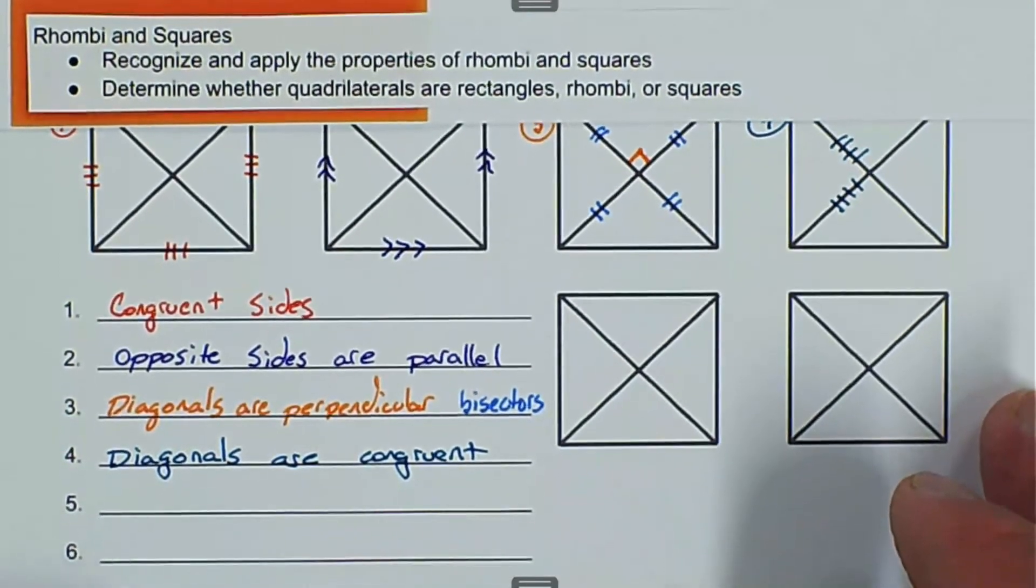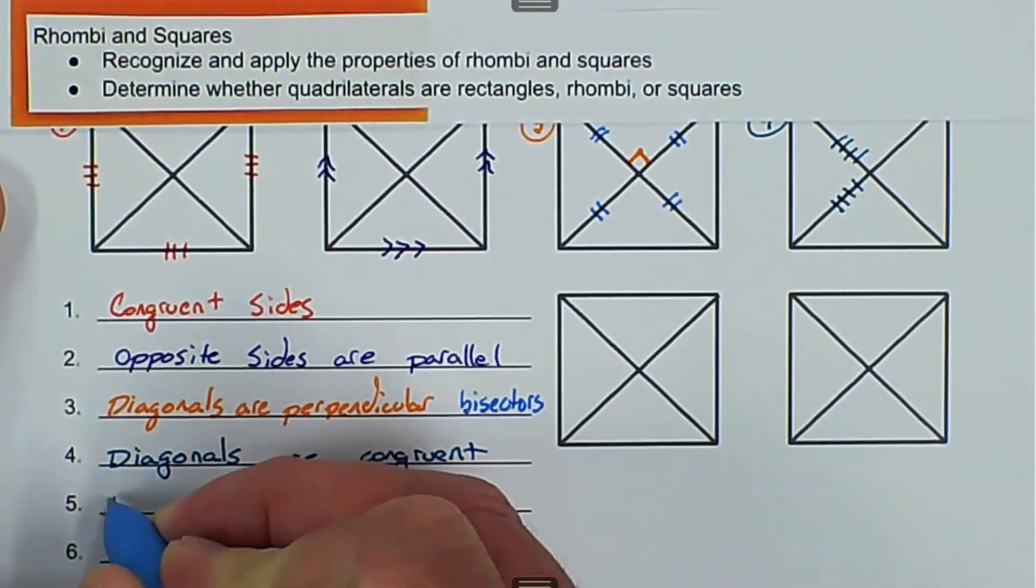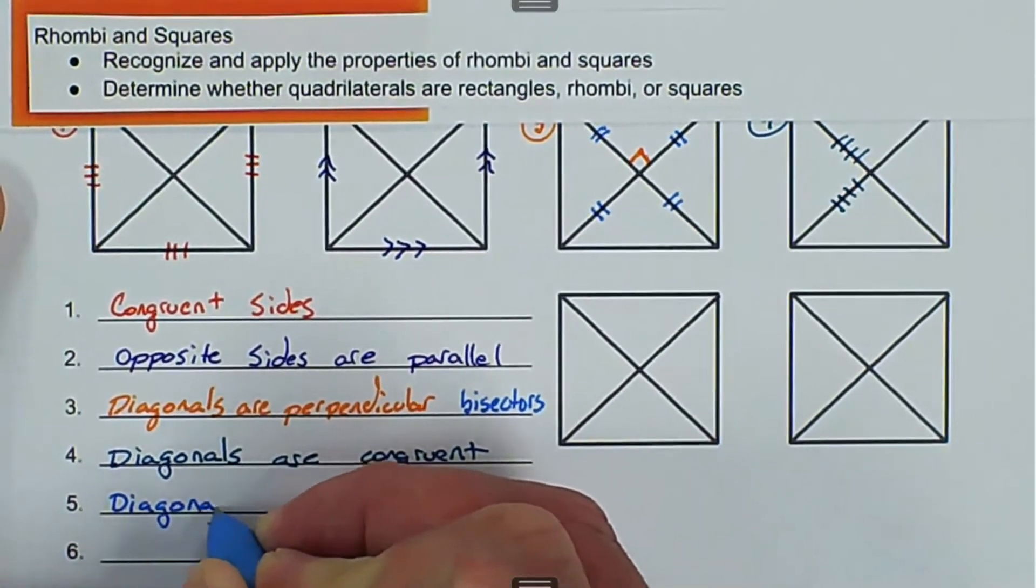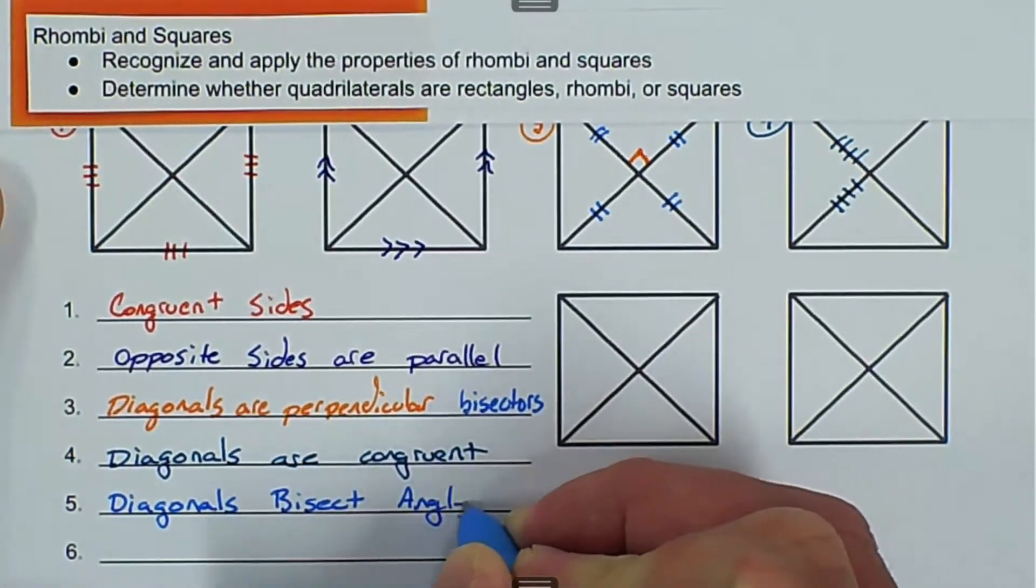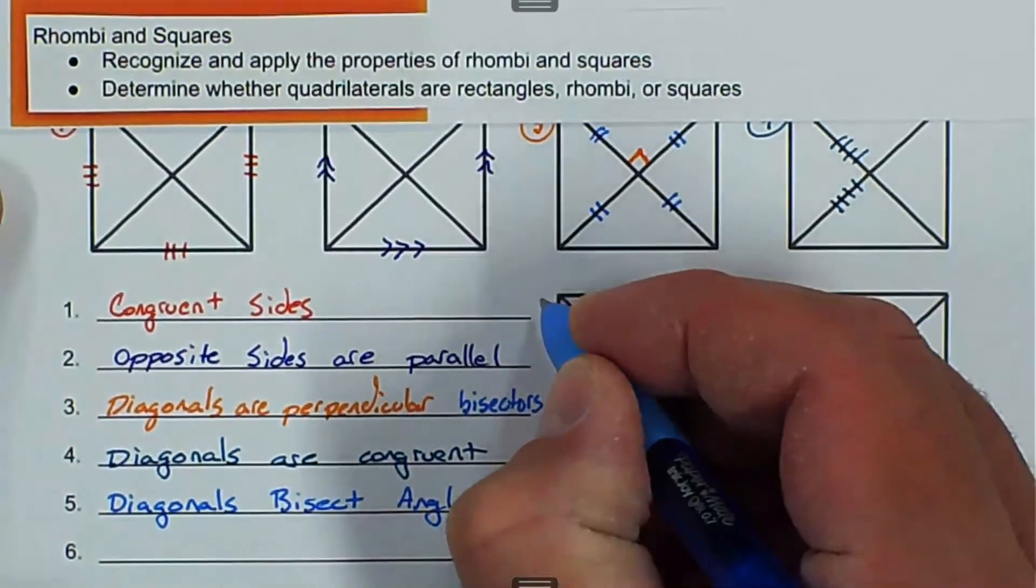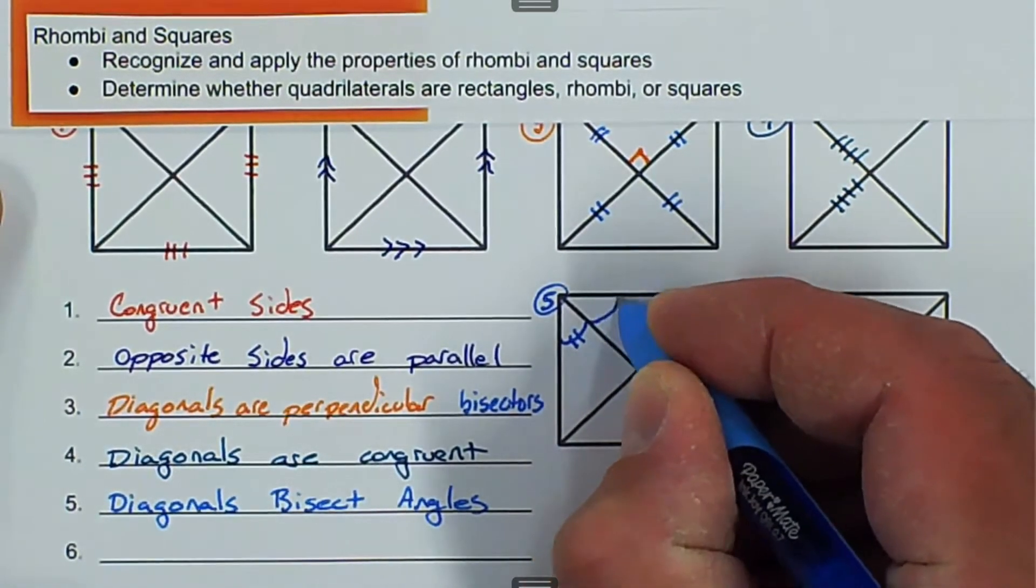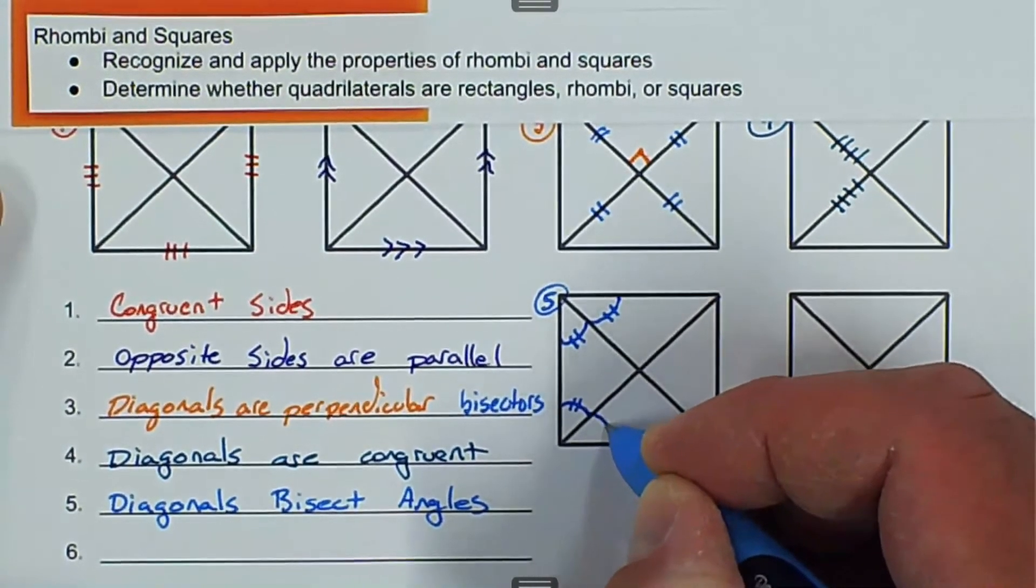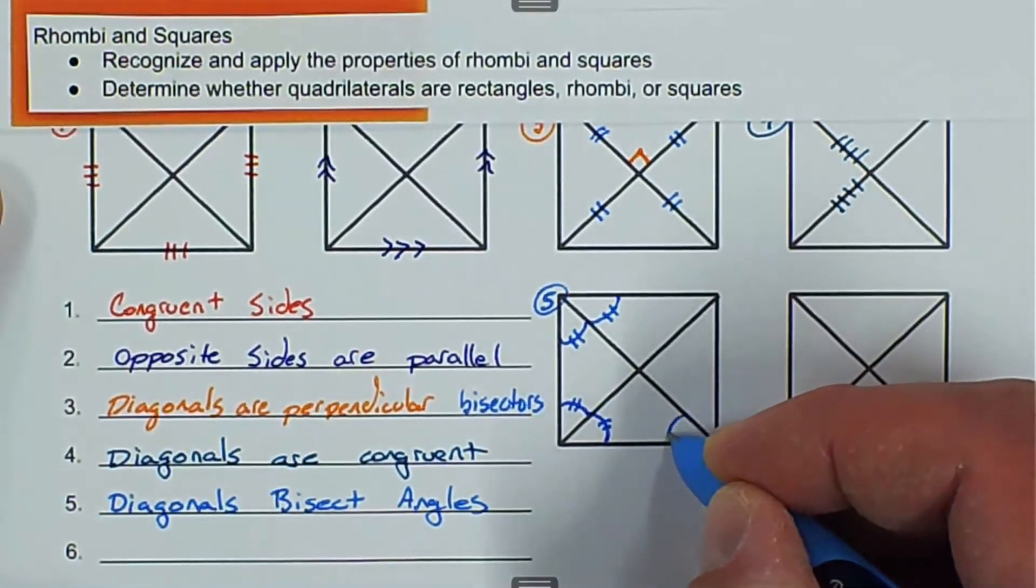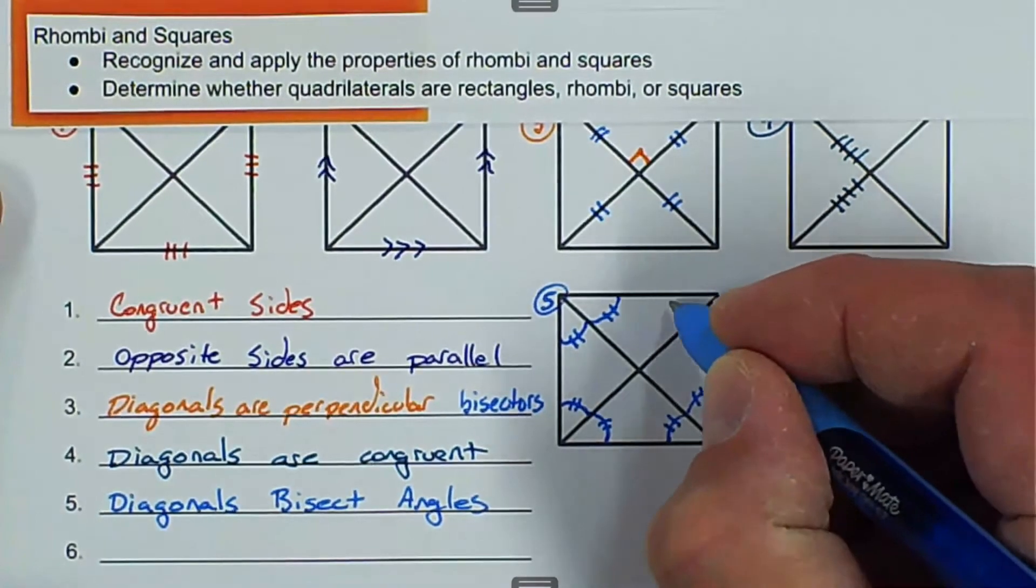We have number five, diagonals bisect angles. We're looking at number five. We'll do this one right here. All that means is that this angle is cut in half, so this part is congruent to this part. The other thing that we know is that all of these angles are also going to be congruent to each other. Not only are they bisected, but these are all 45-degree angles.